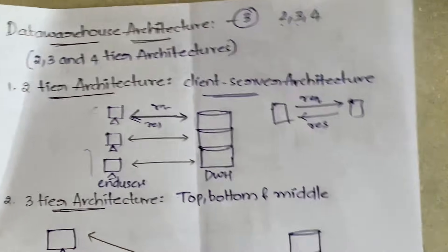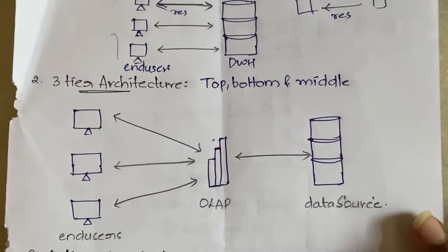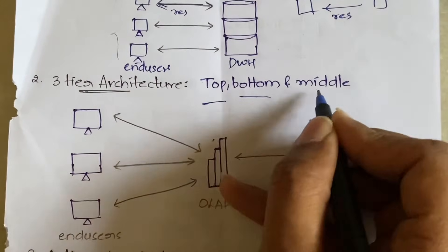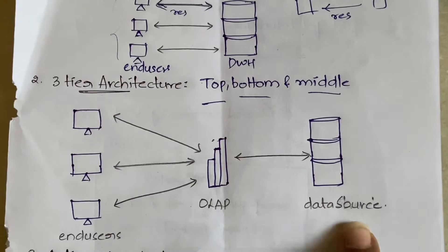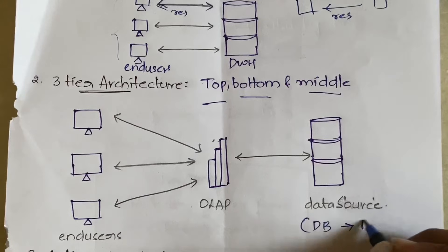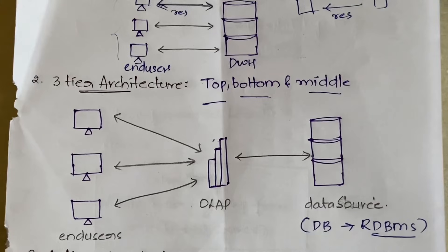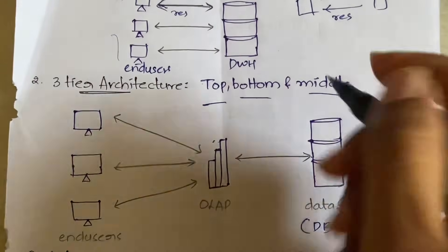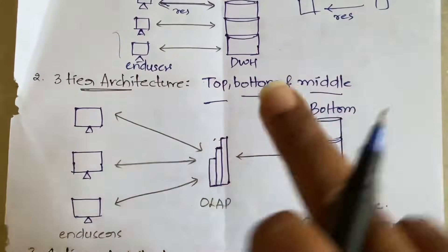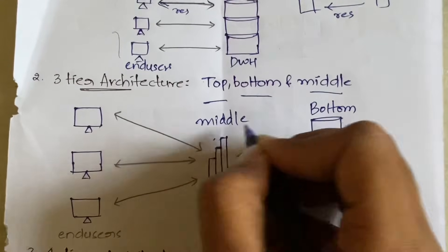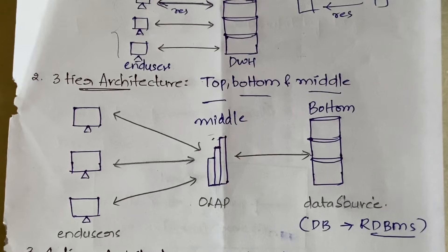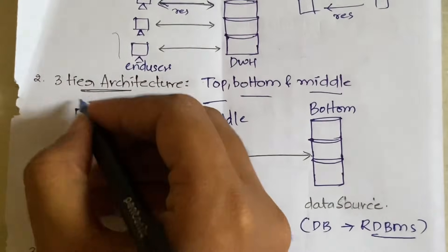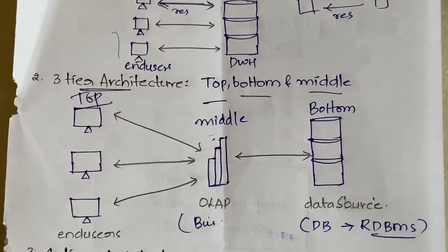Now let us go to three-tier architecture and see what is additionally added. In three-tier architecture we have three layers: top, middle, and bottom. The bottom tier is the database — the data source where information is stored in the form of RDBMS, meaning in the form of tables. The middle tier is the OLAP server, which I already made a separate video on. Business logic is present in this middle tier. The top tier is where the end users come, and clients can access data directly from this top tier.